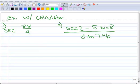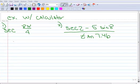Well, you don't have a button for the secant, but you do know that the secant of any arc is equal to 1 over the cosine of that same arc. So this is equal to 1 over the cosine of 8 pi over 4.